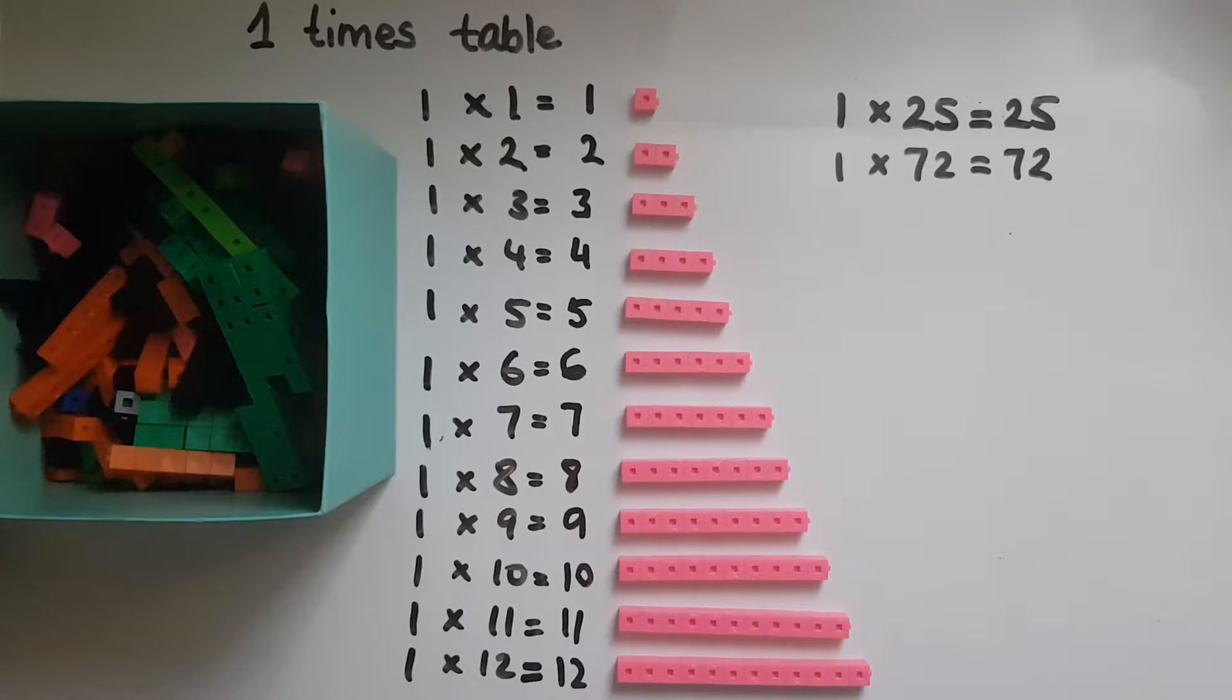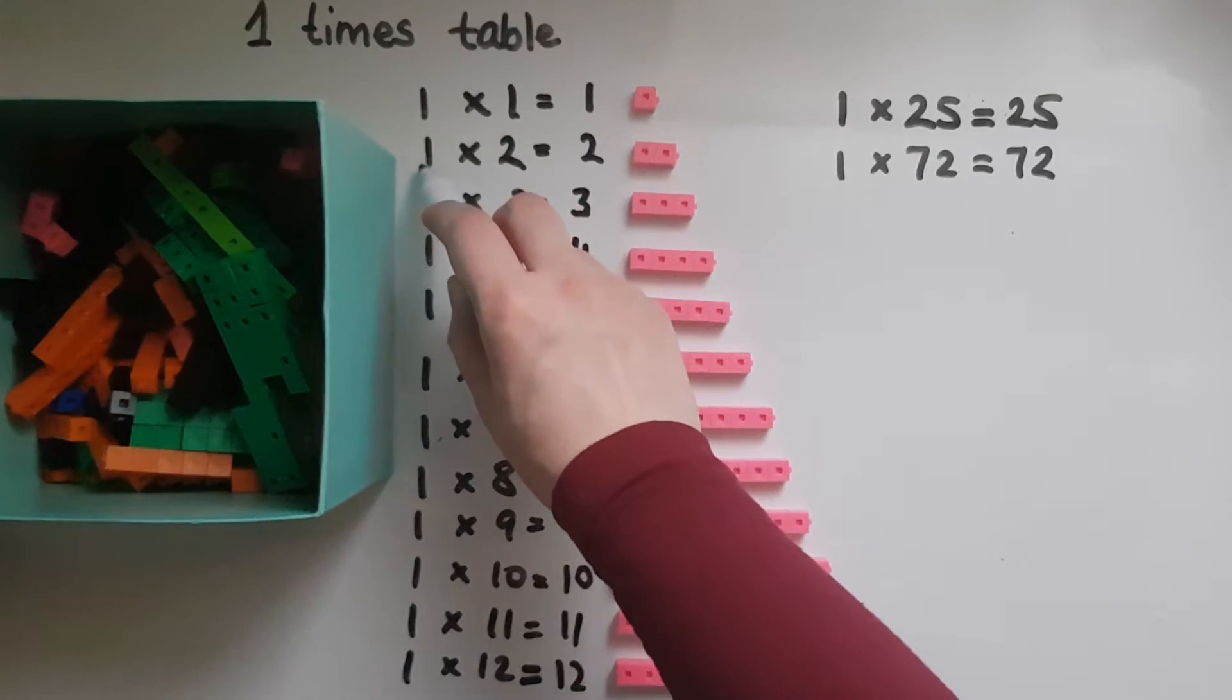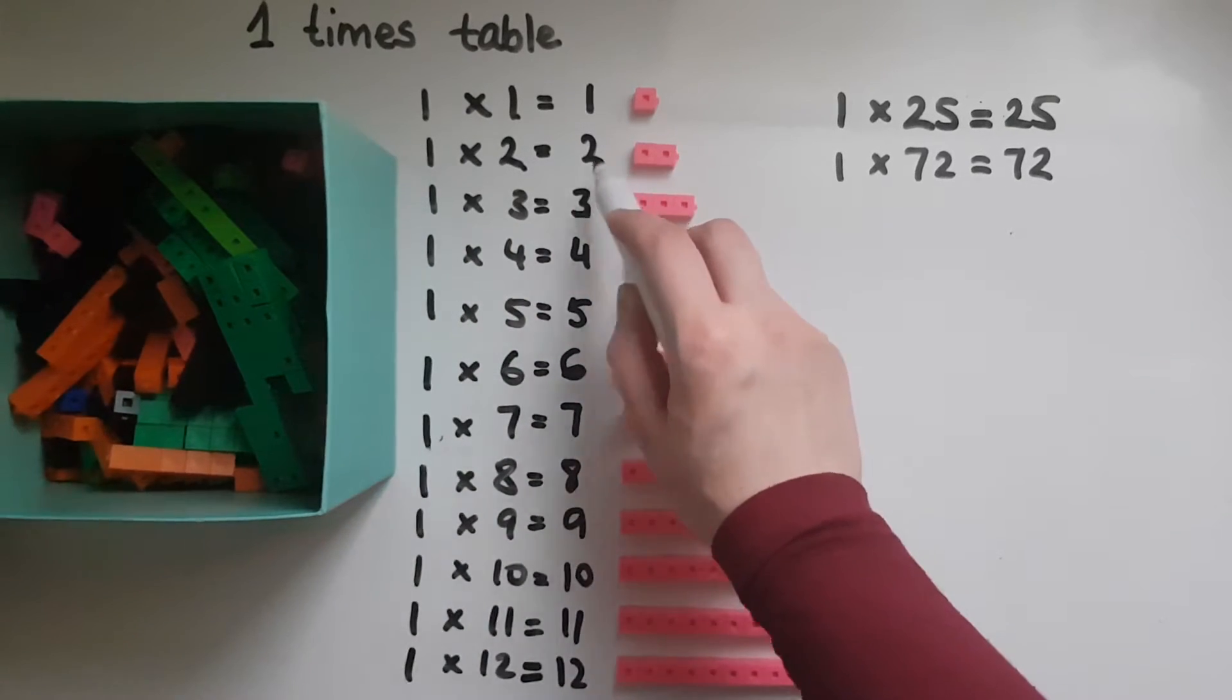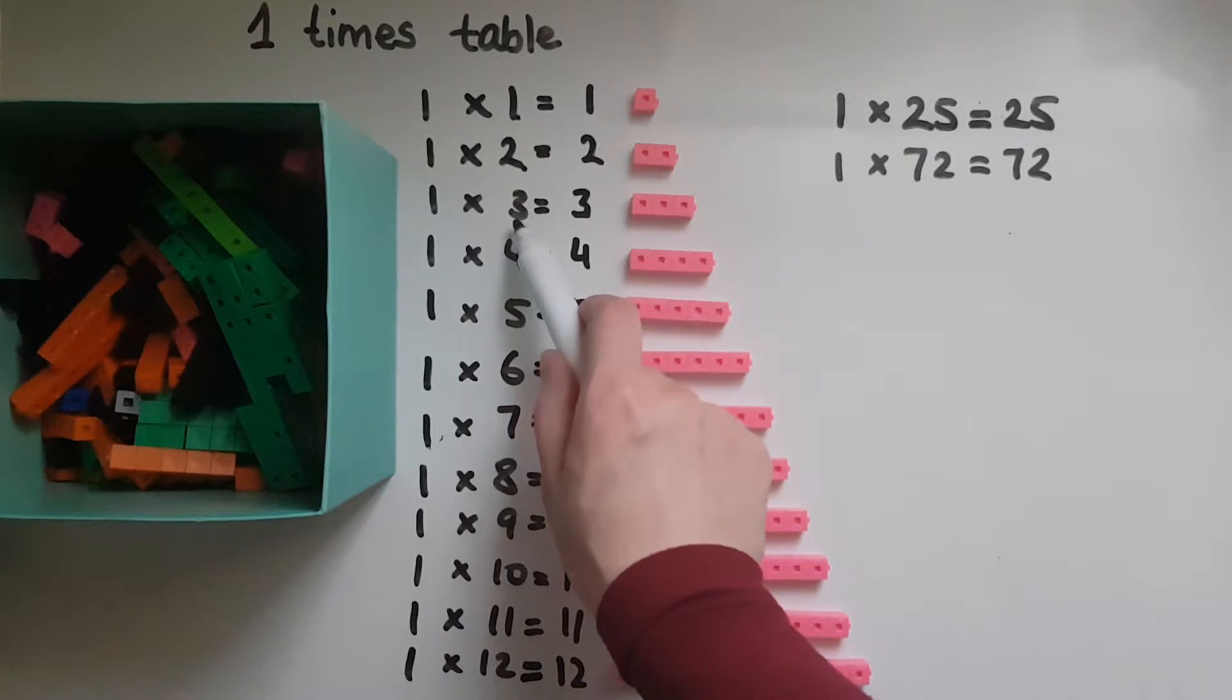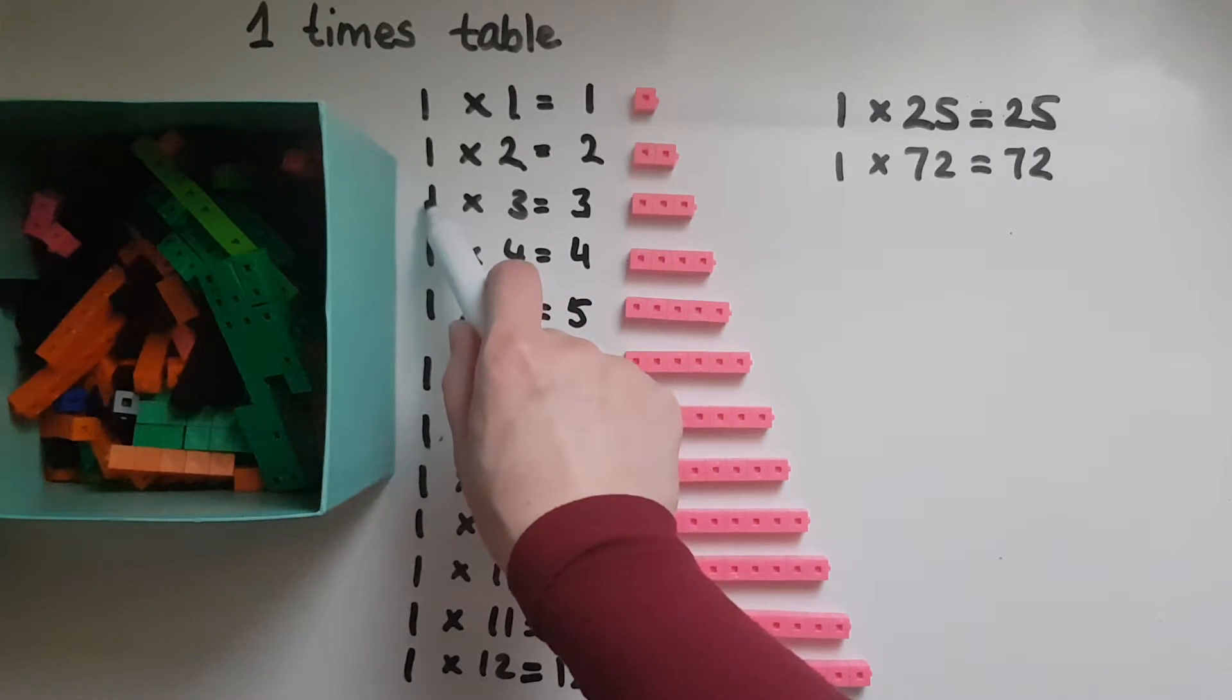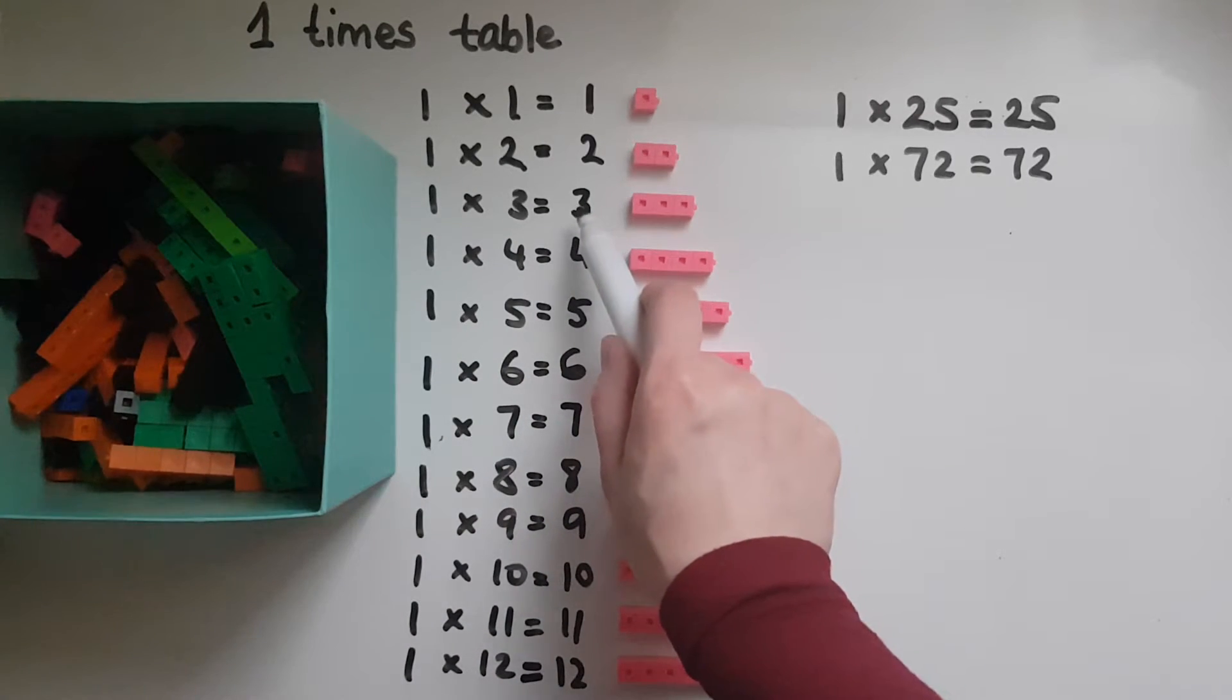One thing to notice as well is that I might go two times to the shop and get one item each and I'm gonna end up with two items as well. So I might go three times to the shop and get one item each time, so I'm gonna bring home three items.